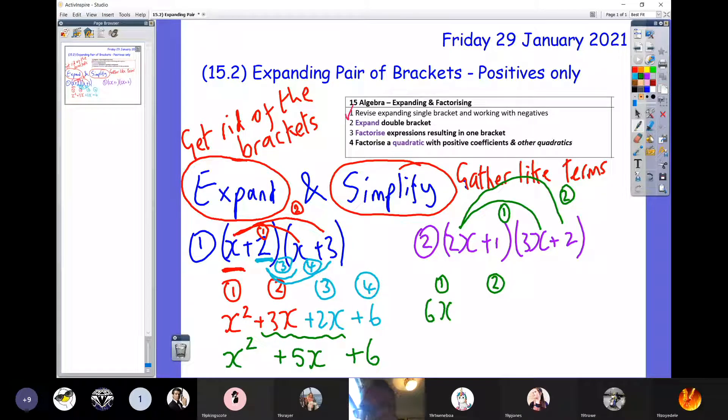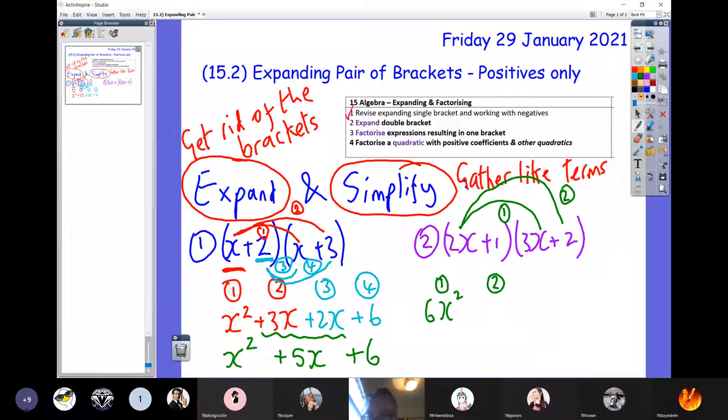Now move over to claw number two. This is going from the 2x to the plus 2. So 2 times x times 2 is 4, and 4 times x, so that's plus 4x. All of the ones today are all positives. I've started us off with some easier ones so we just get used to the four claws and the two-step process of expanding with multiplying and simplifying by adding. Next lesson we'll start introducing some negatives.